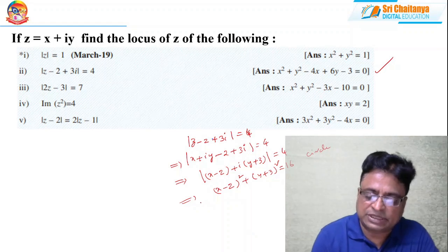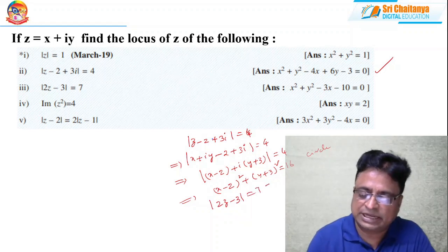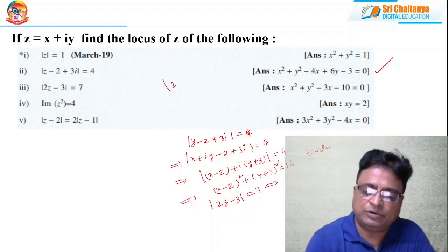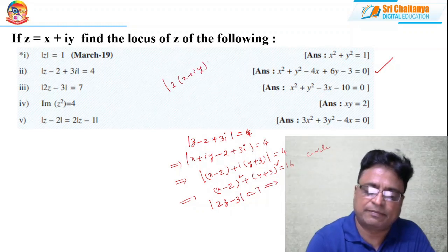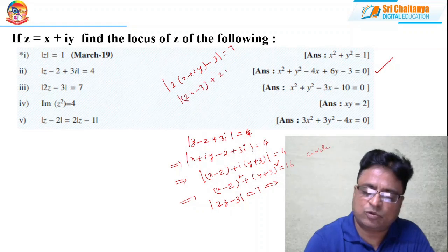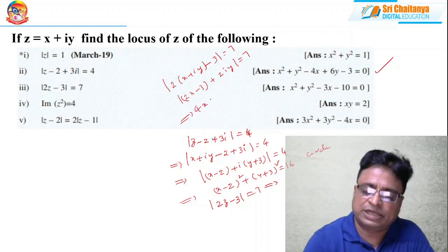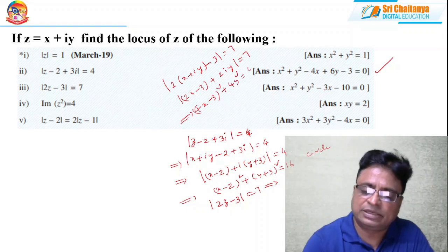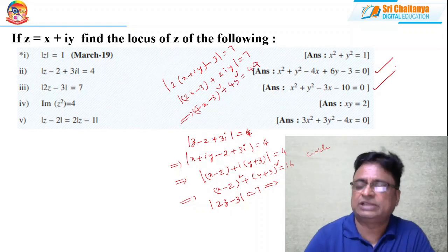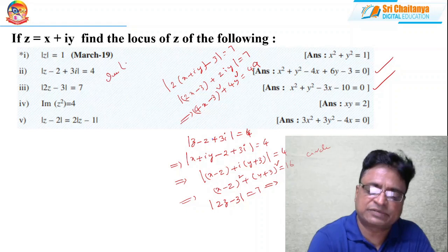Now the third problem: |2z − 3| = 7. I can write this as |2(x + iy) − 3| = 7, which becomes |(2x − 3) + 2iy| = 7. By squaring: 4(x − 3)² + 4y² = 49. After simplification you get the locus as a circle.